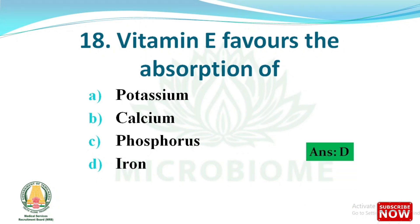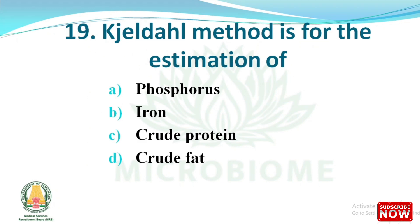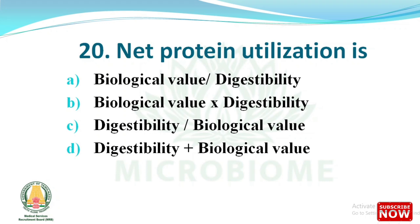Next question: vitamin E favors the absorption of which of the following? The options are potassium, calcium, phosphorus, and iron. The right answer is option D, iron. Next question: the Kjeldahl method is for the estimation of which of the following? The options are phosphorus, phosphorus and crude protein, crude fat. The right answer is option C, crude protein. Next question: net protein utilization is — the right answer is option B, biological value multiplied by digestibility.